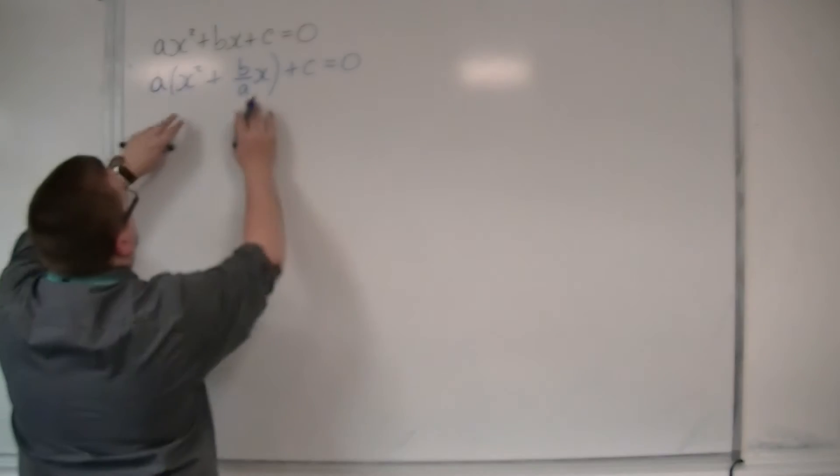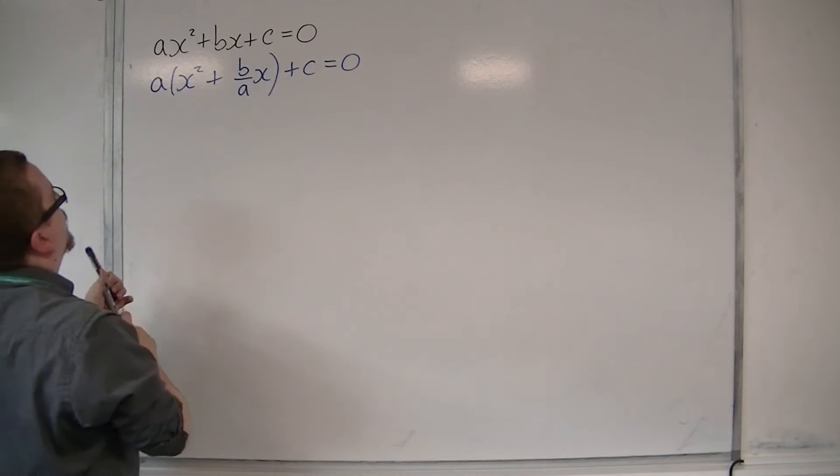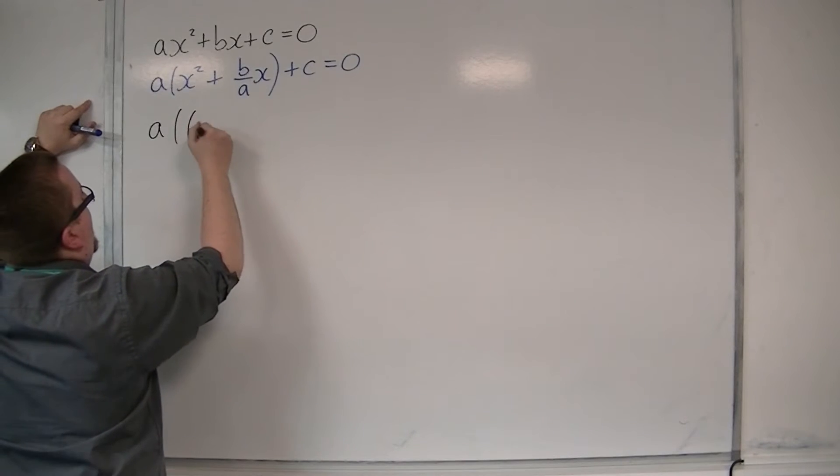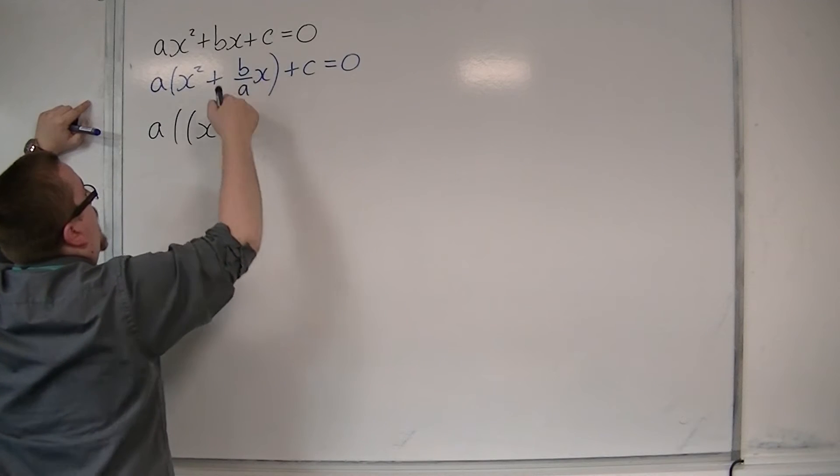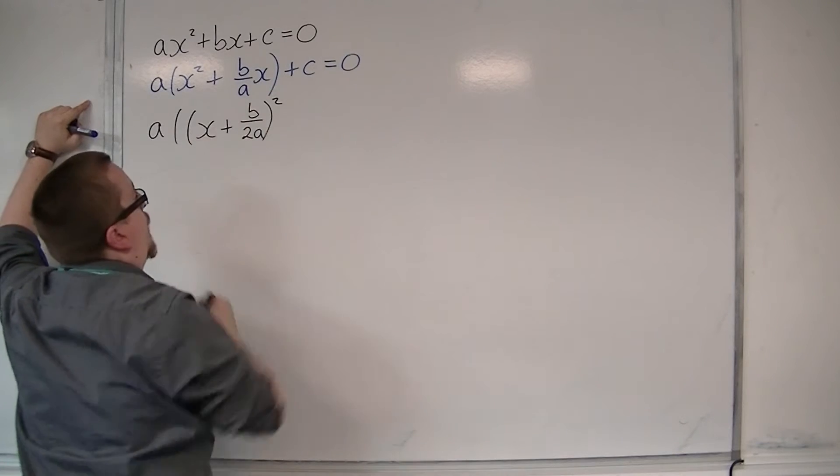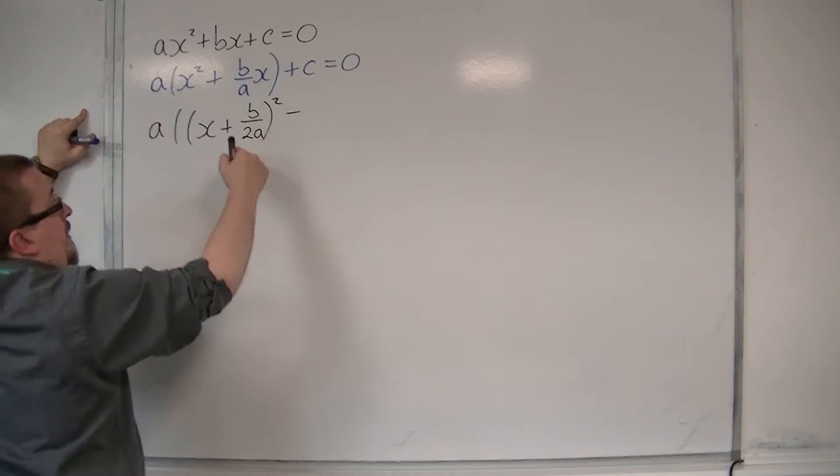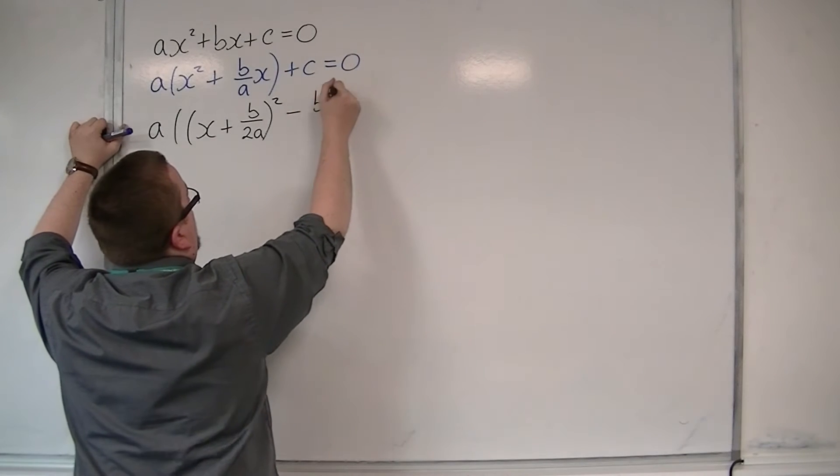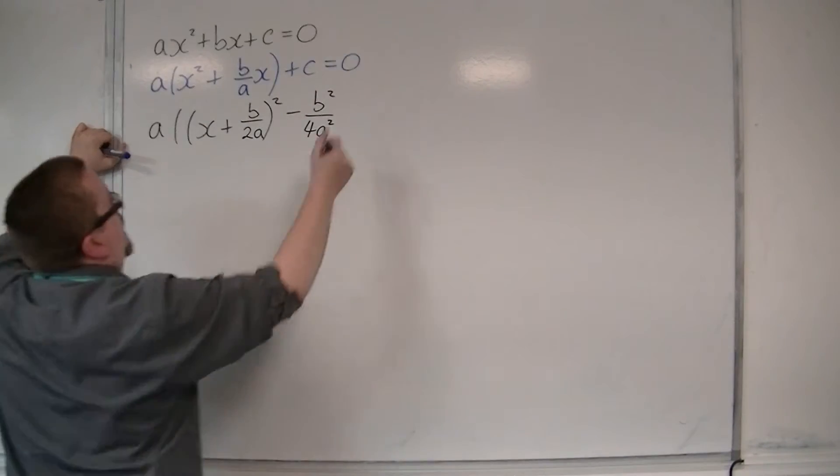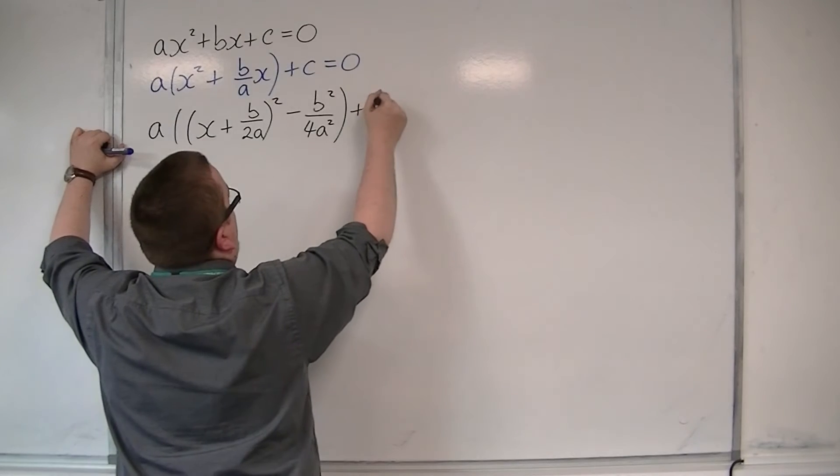I'm then going to complete the square on what is inside that bracket. We're going to have x plus half of the b over a, which is b over 2a, all squared. Take away the square of that term, which will be b squared over 4a squared. Close the bracket, and we've got that plus c on the outside.